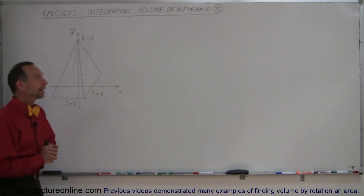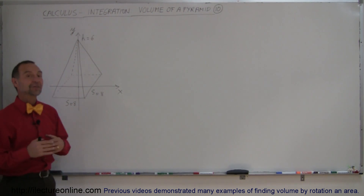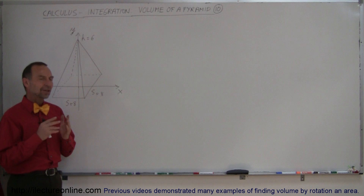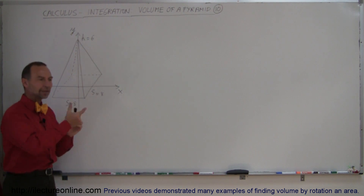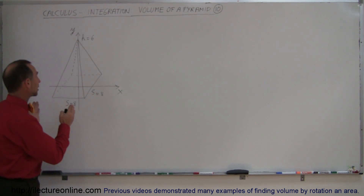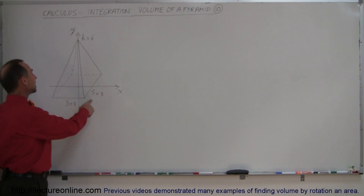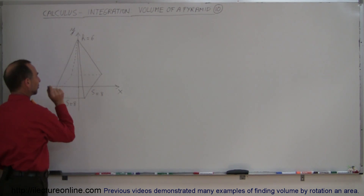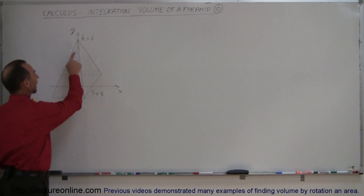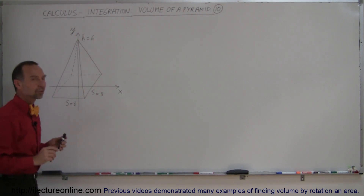Welcome to Electron Line. Here we're doing another example of how to find the volume of something, but instead of rotating an area around an axis, we're simply going to find the volume of a square base pyramid. The base of the pyramid is 8 by 8, the height is 6, and the center of the base is located at where the x and the y axis cross.